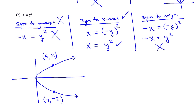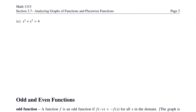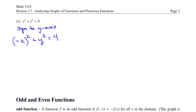Let's look at example C: x squared plus y squared equals 4. Check for symmetry to the y-axis by plugging in negative x. We get negative x squared plus y squared equals 4. Since negative x squared equals x squared, we get back x squared plus y squared equals 4 — the original equation — so we have symmetry to the y-axis.